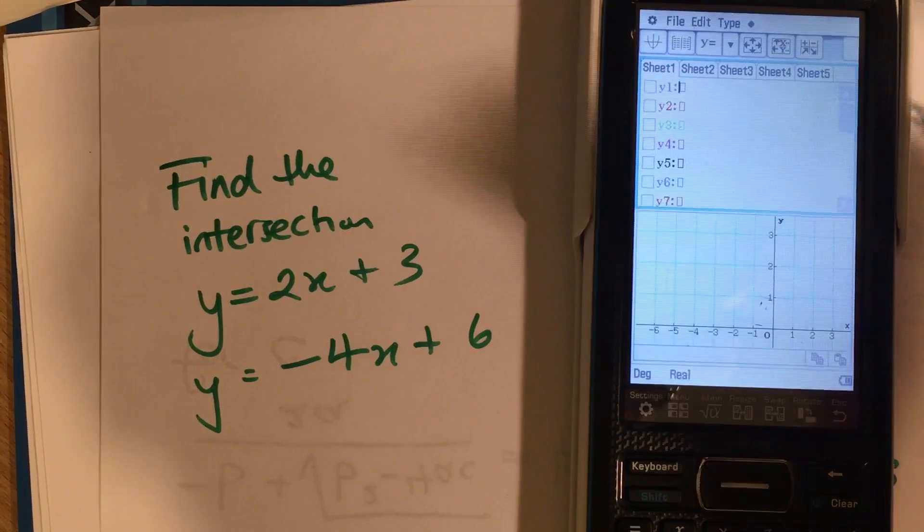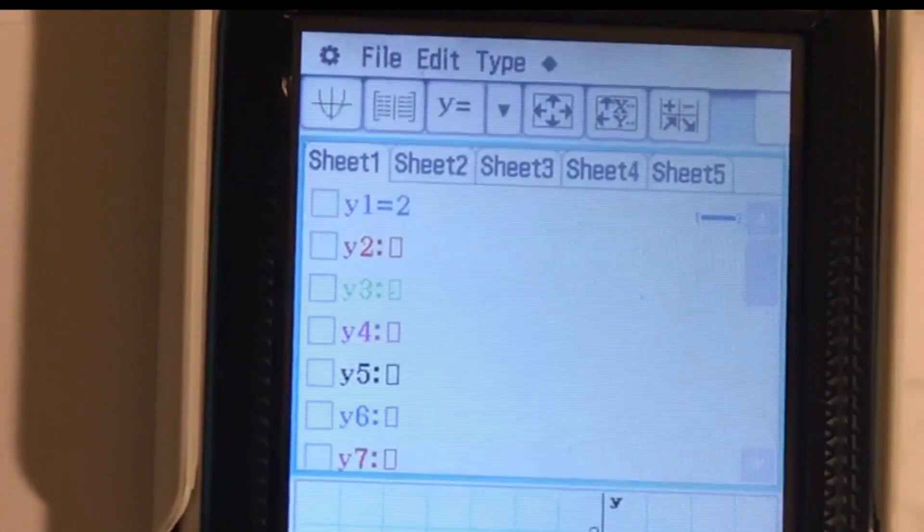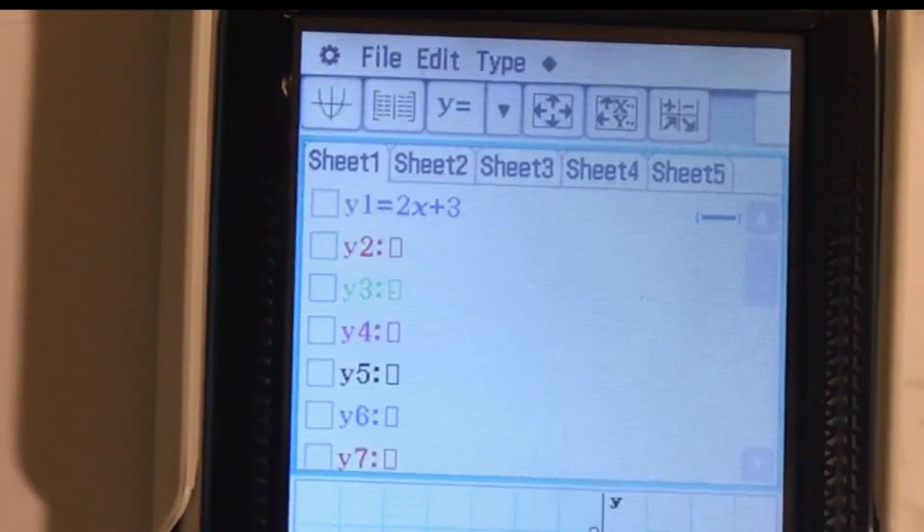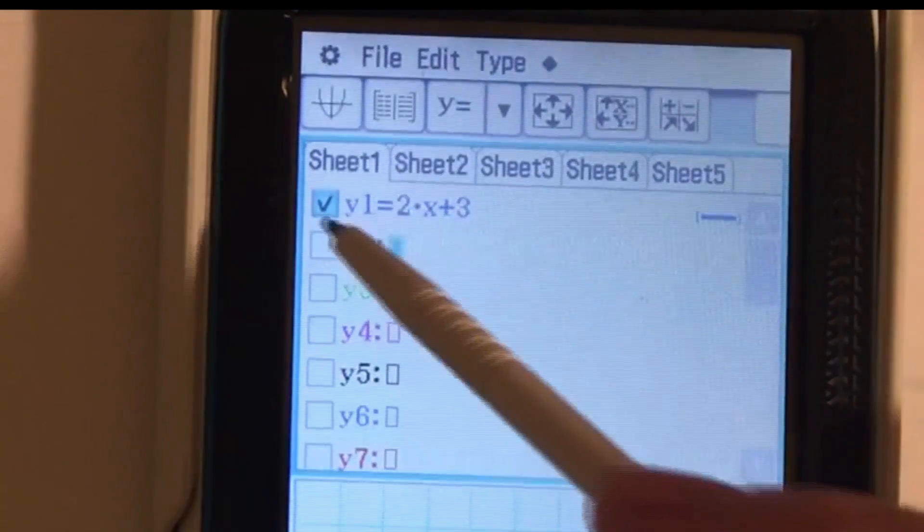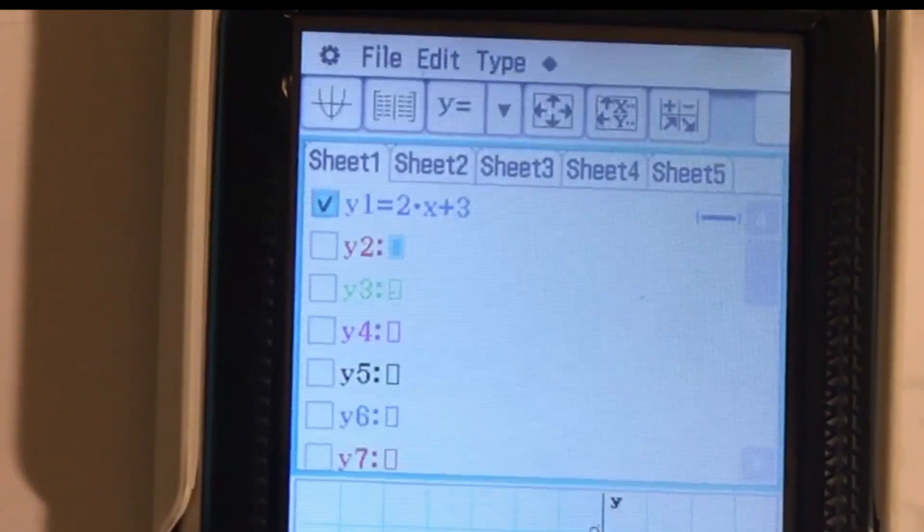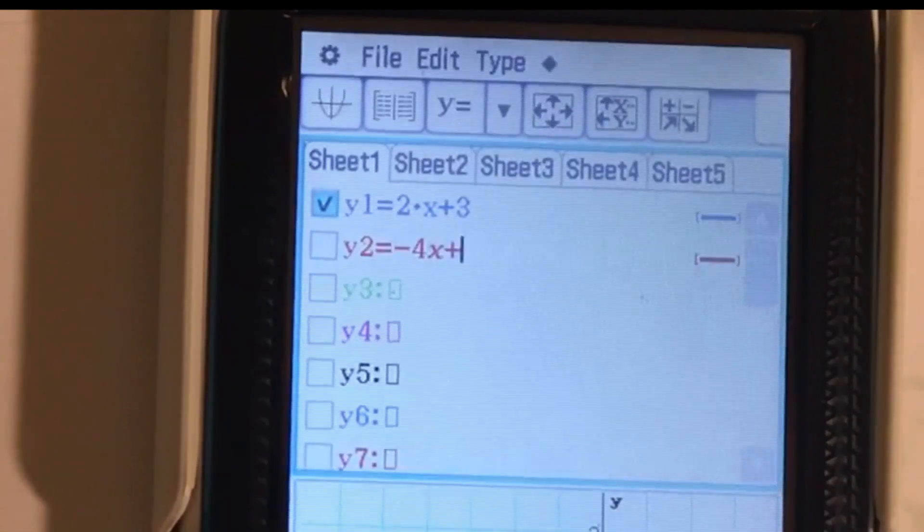I can go to graph and table, and I can type the two equations in. 2x plus 3, enter. You might have seen there it's got a lovely tick on there now, and negative 4x plus 6.